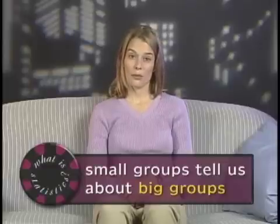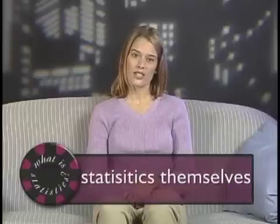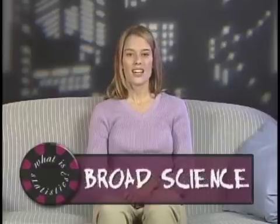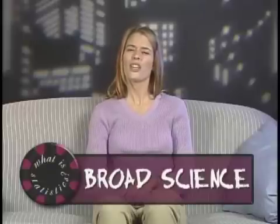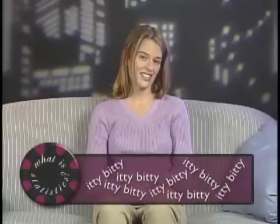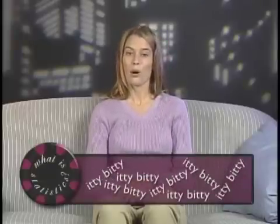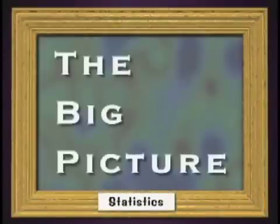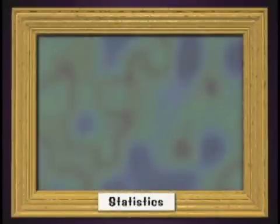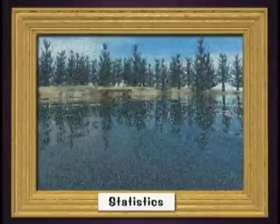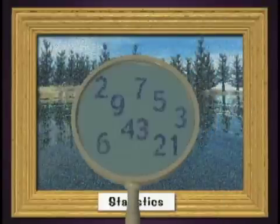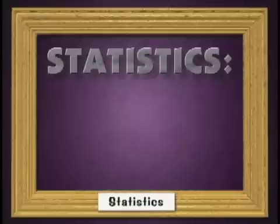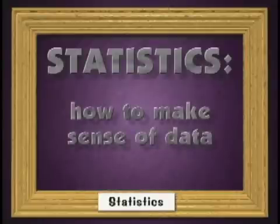These smaller groups of numbers are the statistics themselves. In other words, the broad science of statistics is composed of lots of itty-bitty statistics - it's a classic case of the part making up the whole. Statistics is a lot like an impressionist painting: when you look at it from afar you see one thing, but after a closer look there's more than originally meets the eye. If you're studying statistics, what you're doing is studying how to make sense of data.